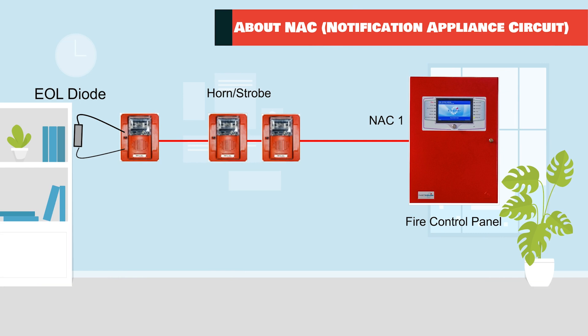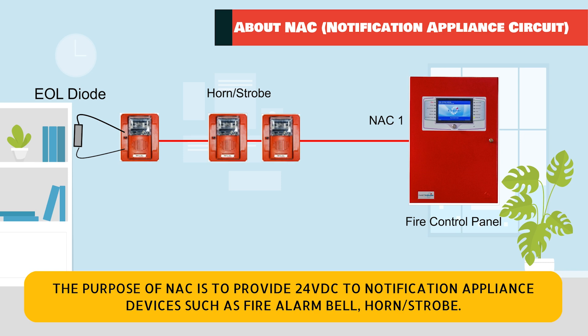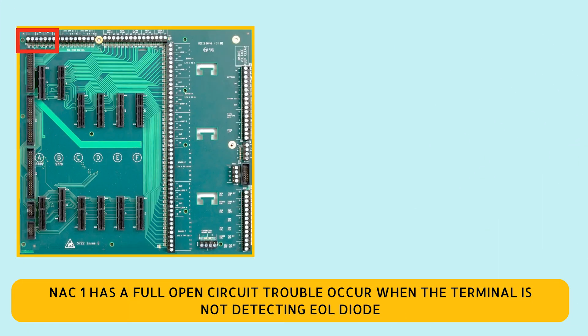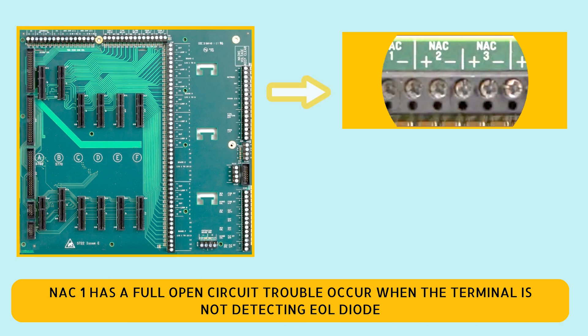The purpose of NAC is to provide 24VDC to notification appliance devices such as fire alarm bell, horn, and strobe. I will use a horn strobe in this demonstration. NAC1 has a full open circuit trouble, which occurs when the terminal is not detecting the EOL diode.